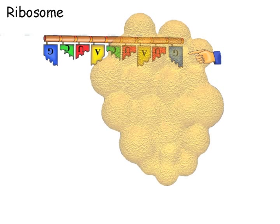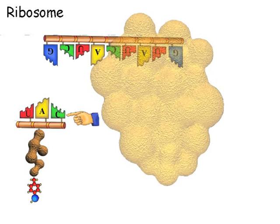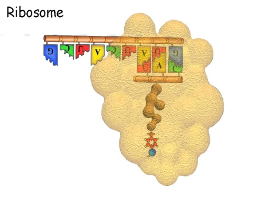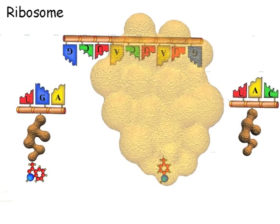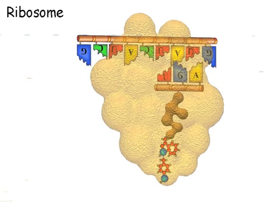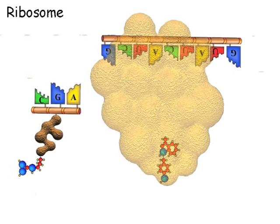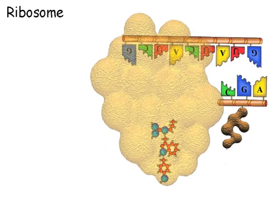The ribosome factory reads the first three letters of the instructions for making the virus and finds a building block with the complementary three letters floating by, and attaches it to the instructions. It then moves on to the next three letters. The first building block is detached. The process continues to complete the virus sub-assembly. A single factory can make 2,000 parts a second.